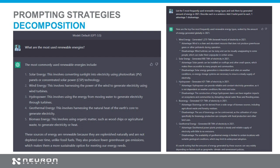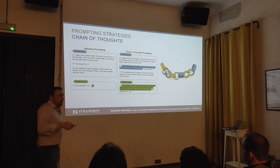So we decompose the problem — first you do this, then second you do this. The example is a bit similar to the later chain of thought, but the intention was to show that you can decompose the first problem, find out what the top five are, and then ask each one by one — give me more info about solar energy, or whatever you want.